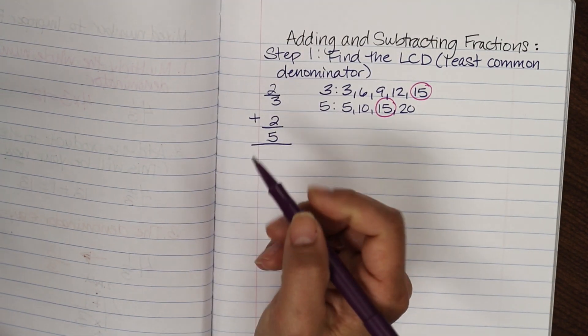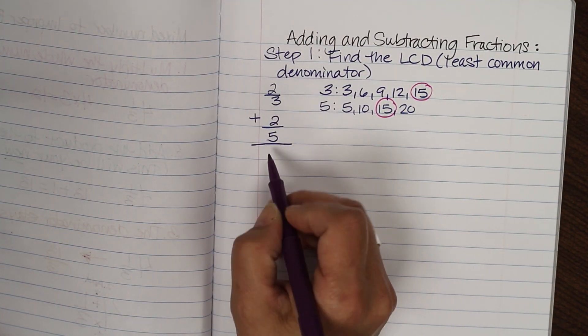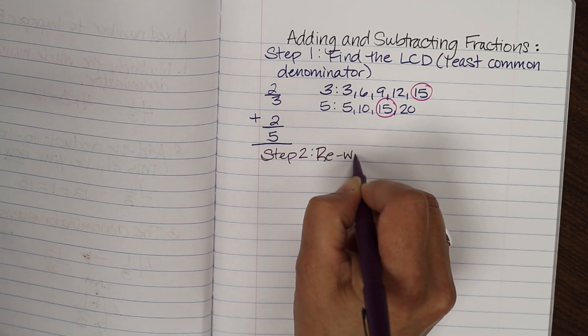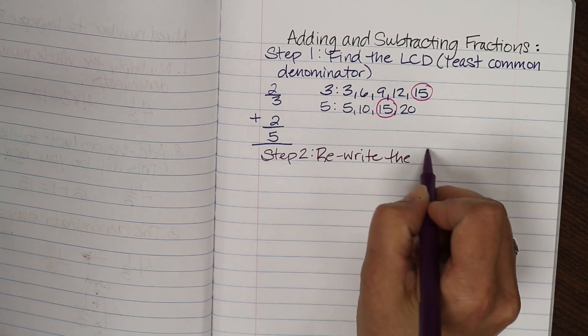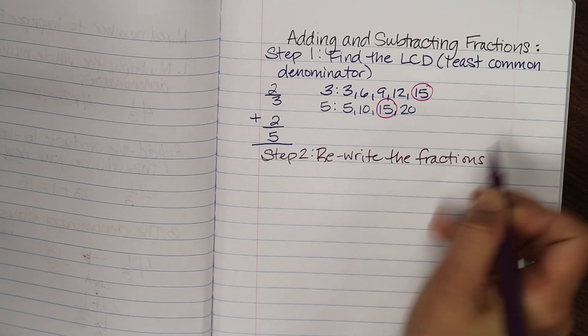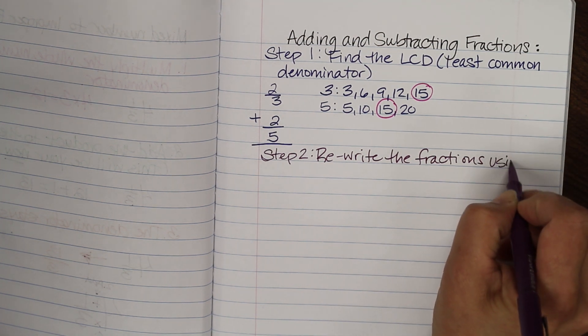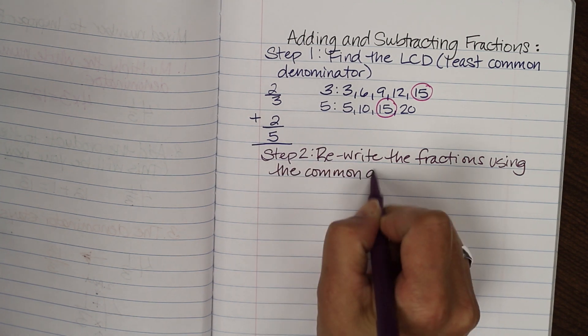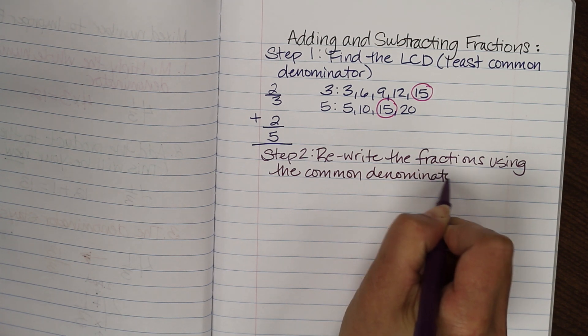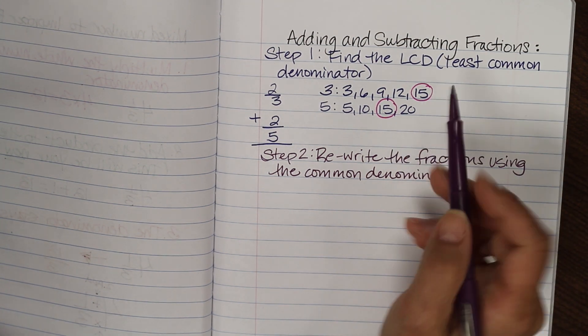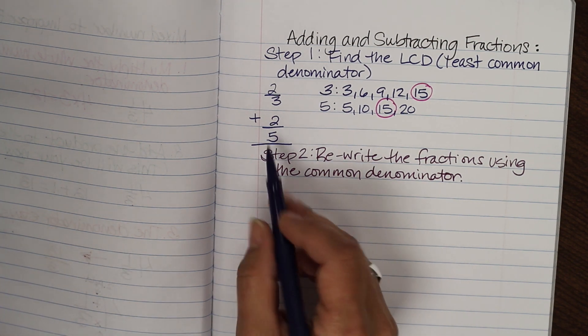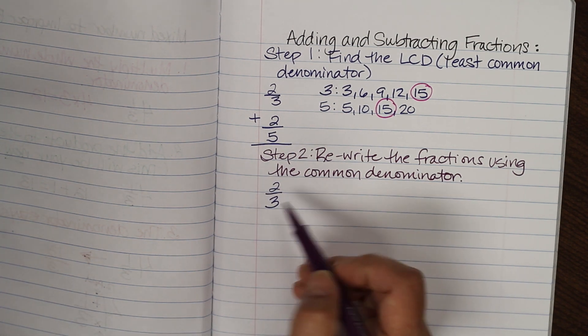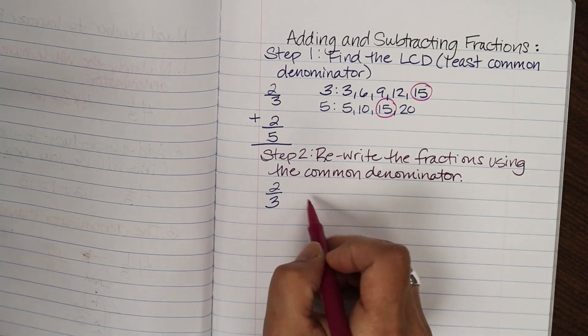So step two is we're actually going to rewrite the fraction using the common denominator. So write in your book, step two, rewrite the fractions using the new common denominator that you found. And we saw that that was the fifteen. So let me show you how that works. So I have two thirds, so let's rewrite two thirds. And now I need to rewrite it using the common denominator.